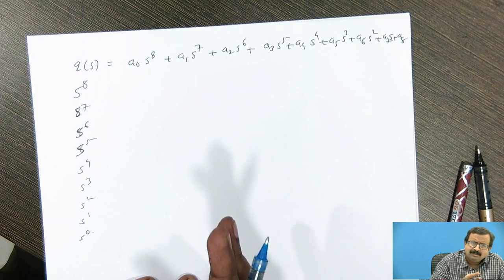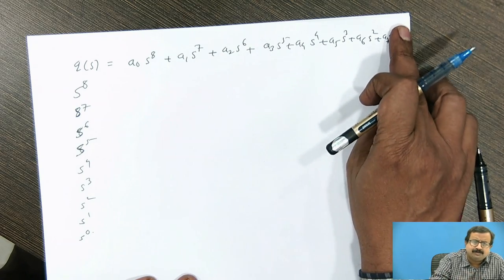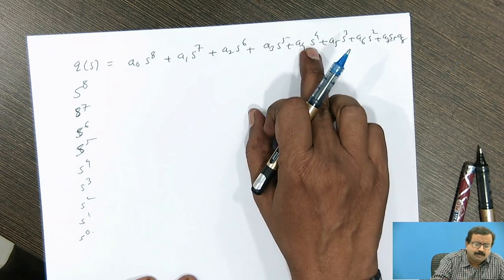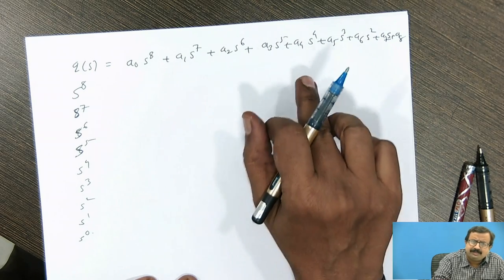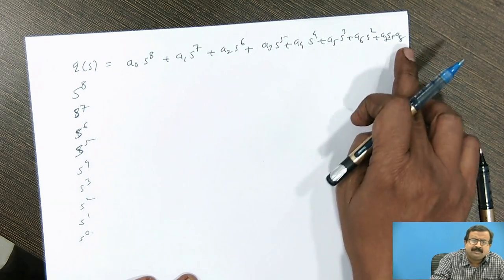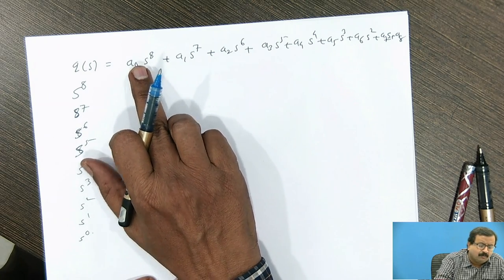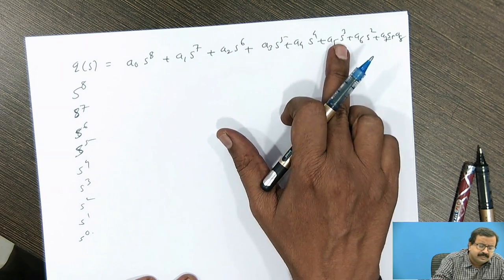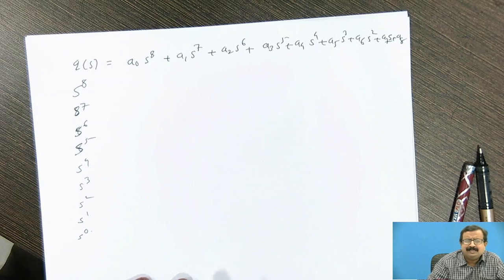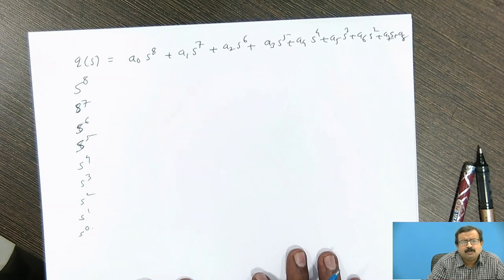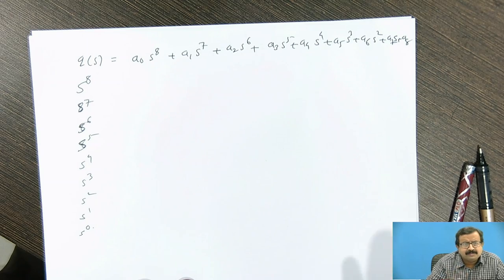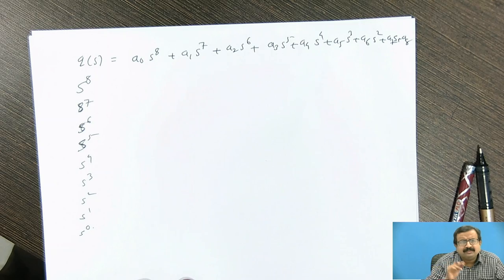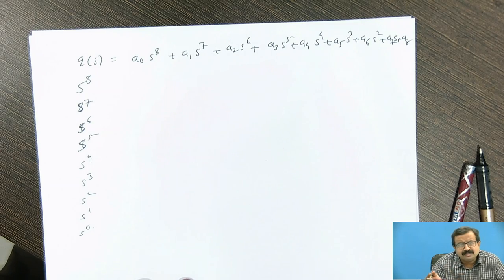Some terms may have 0 coefficient. Suppose this constant term is not there, so we have to write that 0. Suppose s raise to 4 coefficient is not present, s raise to 4 term is absent, you write 0 times s raise to 4. So for me, all the terms are present. So if it is 8th order equation, 1, 2, 3, 4, 5, 6, 7, 8 and 9 terms are there. That is simple. For a quadratic we have got 3 terms. For a cubic we have got 4 terms. For a quadratic we have got 5 terms. Similarly, nth order polynomial, we will have n plus 1 terms. So 8th order polynomial, we will have 9 terms.